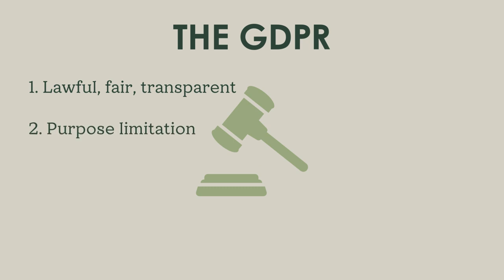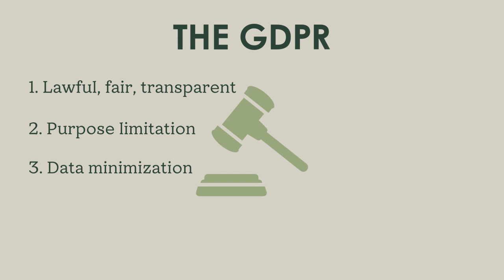Principle two: any collection of personal information can only happen for specified, explicit, and legitimate purposes, and not be further processed in a manner incompatible with those purposes. This so-called purpose limitation means that companies can't collect your data for one purpose and then decide to sell it on to another company without your prior and explicit informed consent. Principle three: the principle of data minimization entails that all collected personal data must be adequate, relevant, and limited to what is necessary in relation to the purposes for which it is processed — a way of trying to get organizations to stop collecting vast amounts of personal information without any specific purpose in mind.